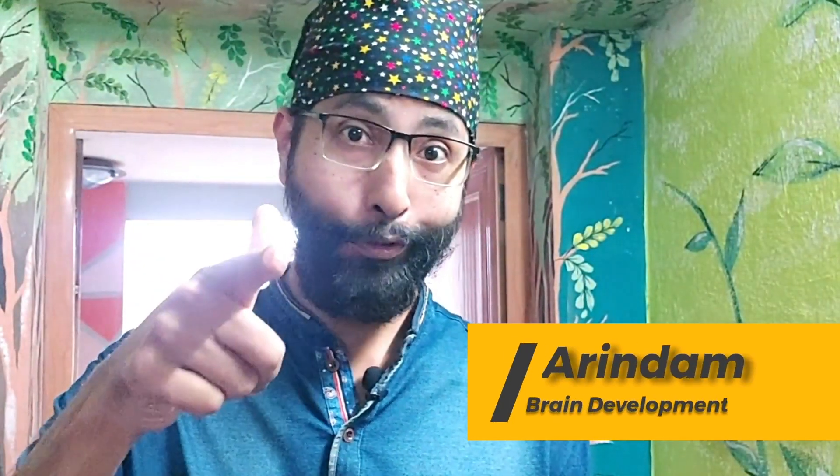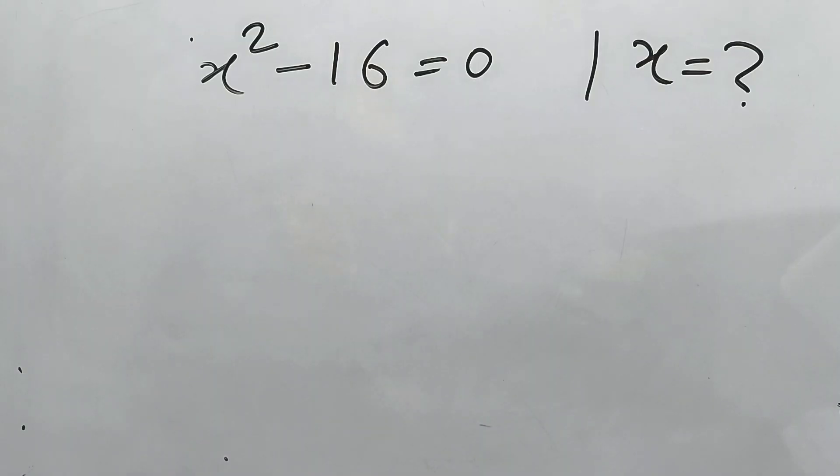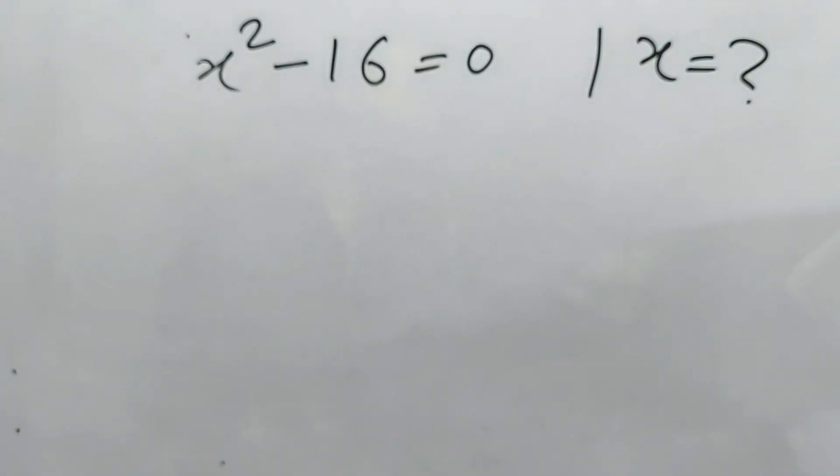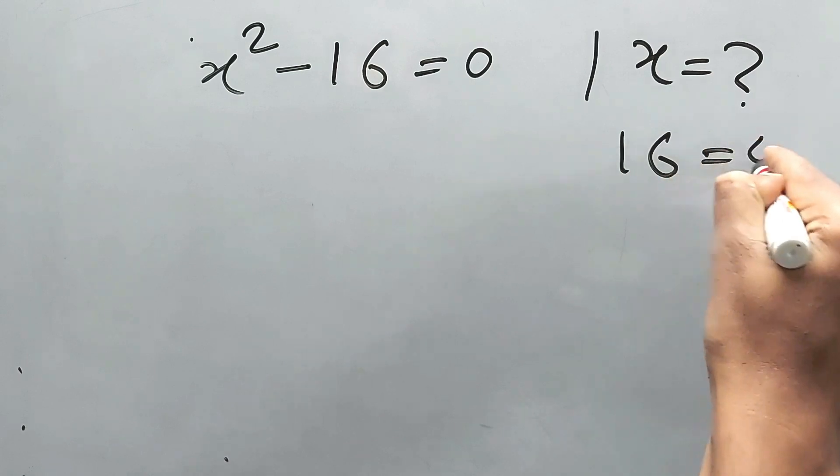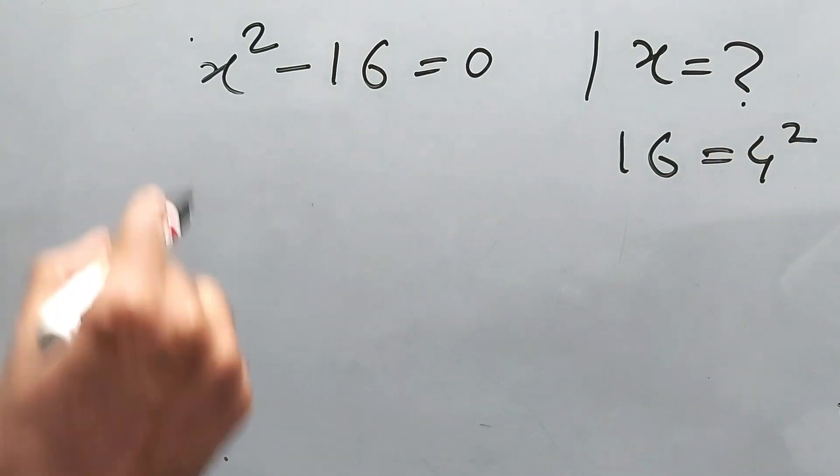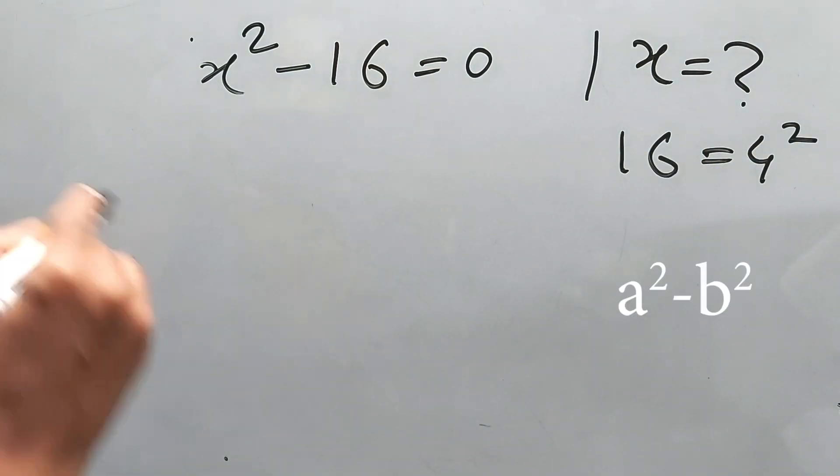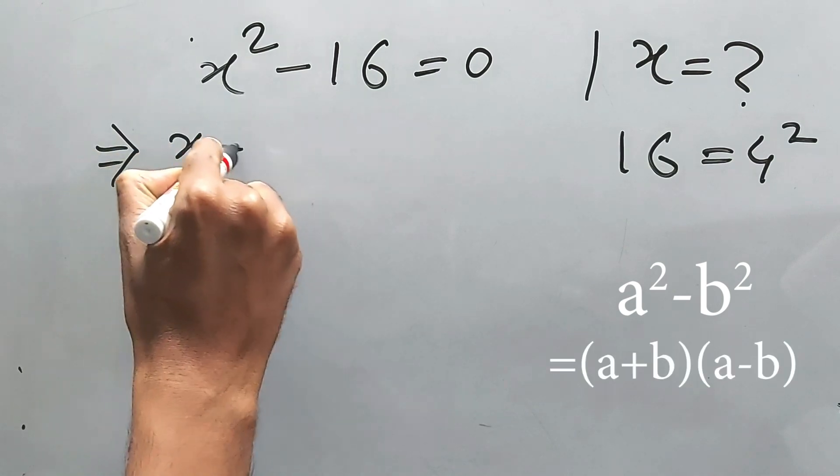Hi guys, this is Arindam. You're watching Brain Development. x squared minus 16 is equal to zero. Now what is the value of x? 16 is equal to 4 squared, therefore x squared minus 4 squared, so x plus 4.